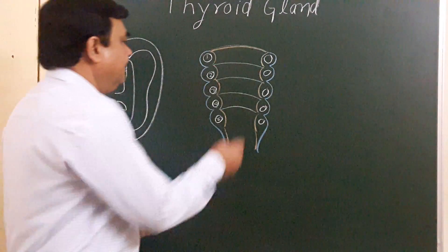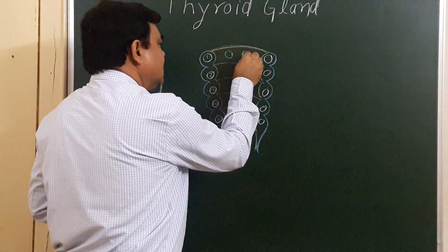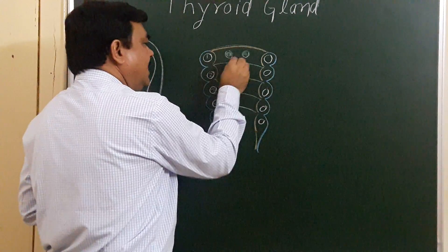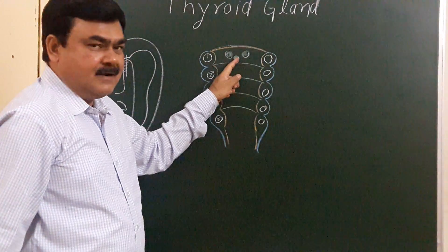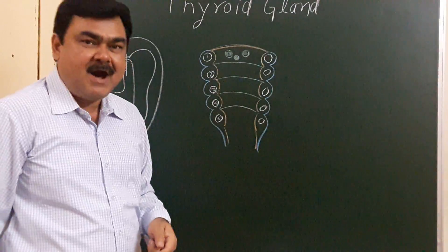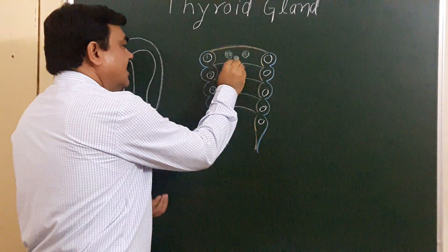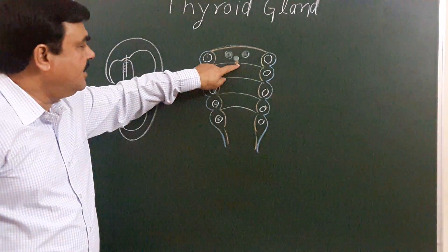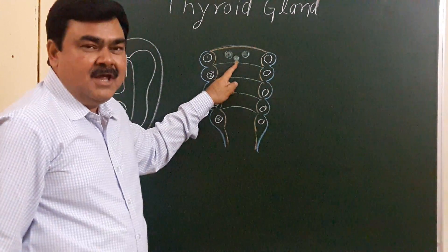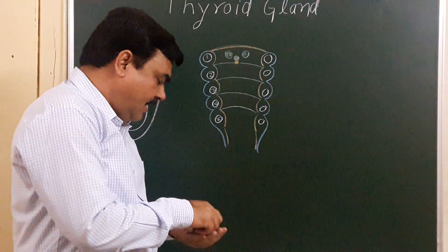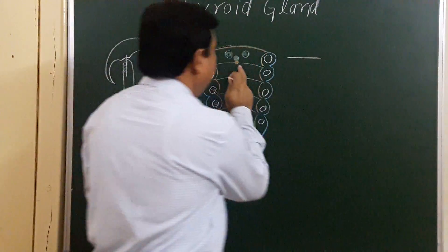Here, during the third week of intrauterine life, two lingual swellings appear, and there is another swelling in the midline called the tuberculum impar. Just behind the tuberculum impar, the endoderm initially becomes thickened.